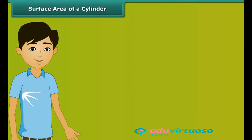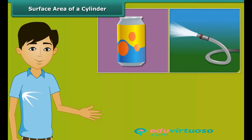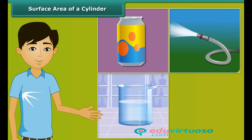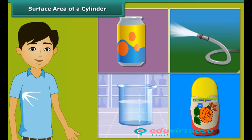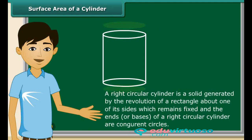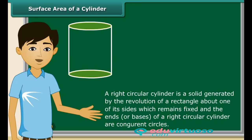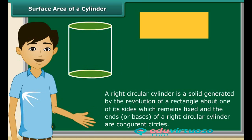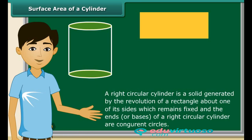You must have come across many solids like thin cans, water pipes, beakers in the laboratory, and powder boxes, which are right circular cylinders. A right circular cylinder is a solid generated by the revolution of a rectangle about one of its sides which remains fixed. The ends or bases of a right circular cylinder are congruent circles.